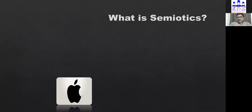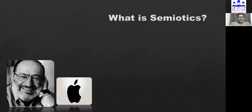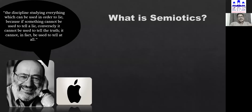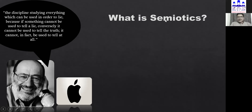What is semiotics? One of the major semioticians, Umberto Eco, who is also famous as a novelist, defines semiotics very accurately: it is the discipline studying everything which can be used in order to lie. Because if something cannot be used to tell a lie, conversely it cannot be used to tell the truth — it cannot in fact be used to tell anything at all. So the symbols used to lie are equally important for telling anything.